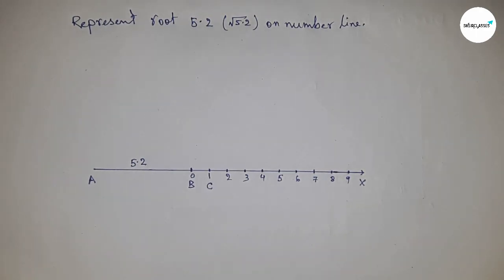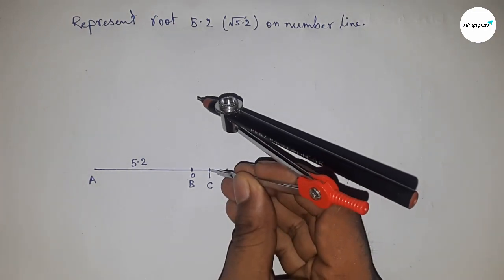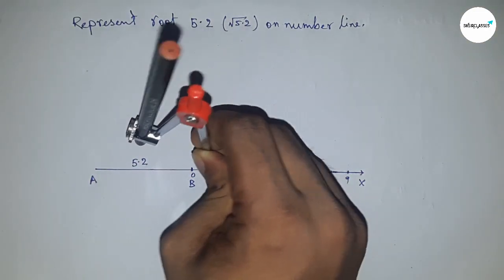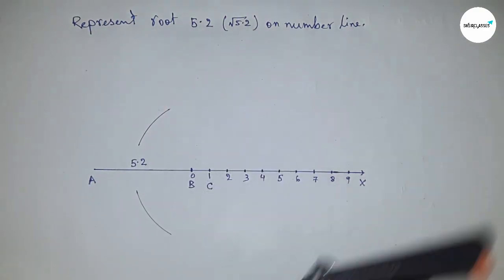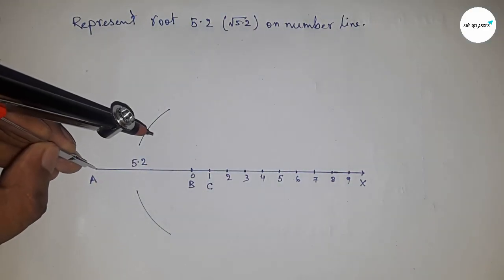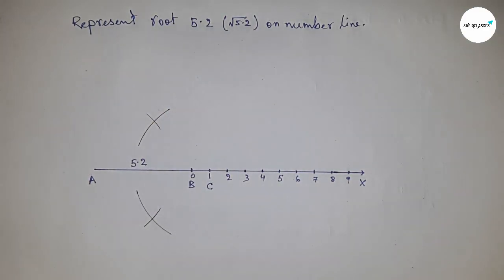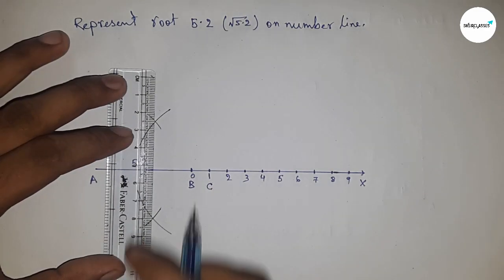Now bisect line AC by placing the compass at A, taking greater than half of AC, and drawing arcs. With the same length, place the compass at C and cut the arcs. Join these points, meeting at point O.